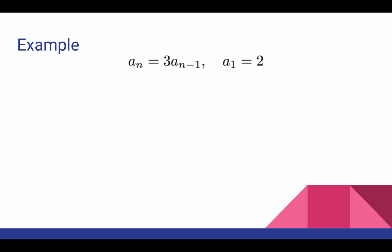We've already seen that r minus three equals zero is the characteristic equation for this recurrence relation. And therefore, r equals three is the one characteristic root that we have.